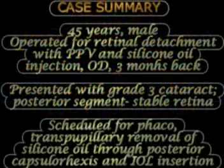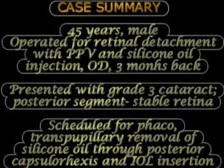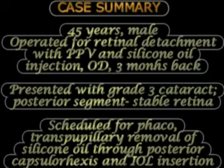In this particular case, this was a 45-year-old male who was operated for retinal detachment and had undergone a vitrectomy with silicone oil injection about 3 months ago in the right eye. He then presented with grade 3 cataract; the posterior segment was stable, the retina was attached, and there was no problem in the retina.